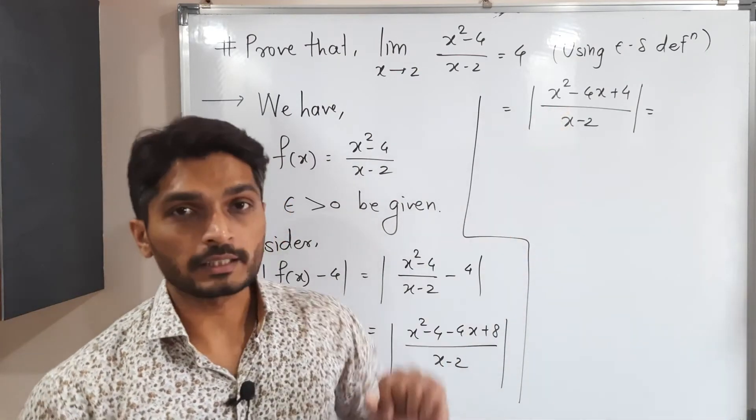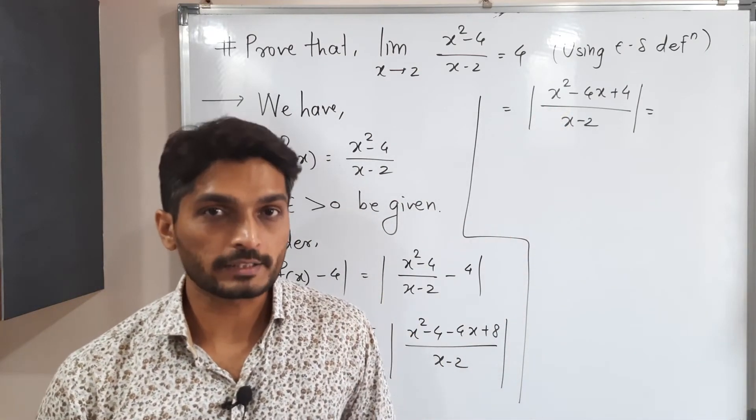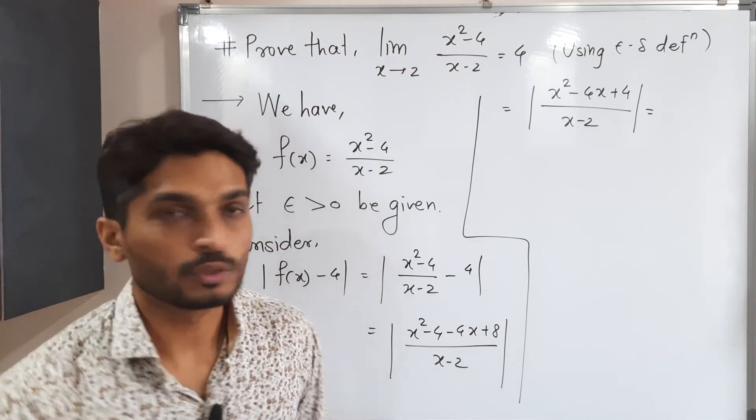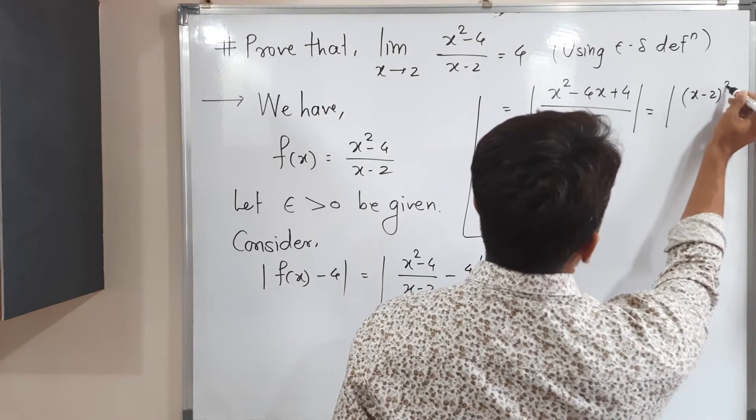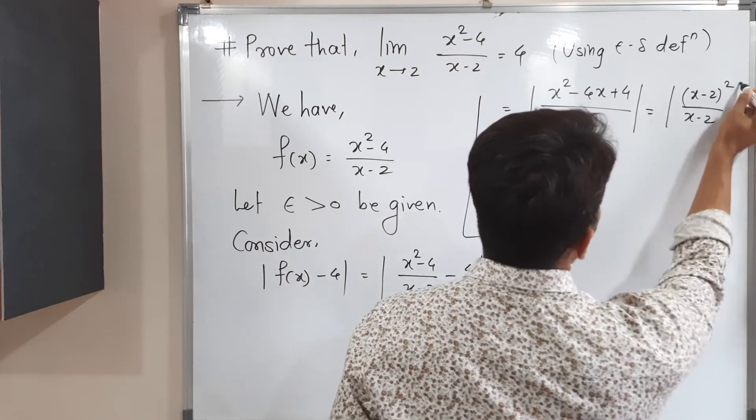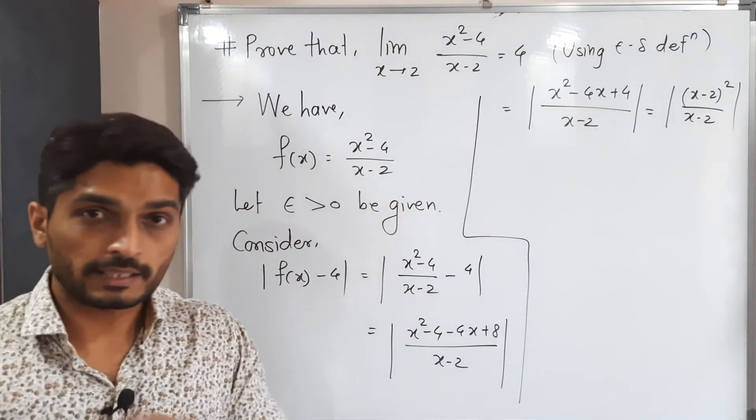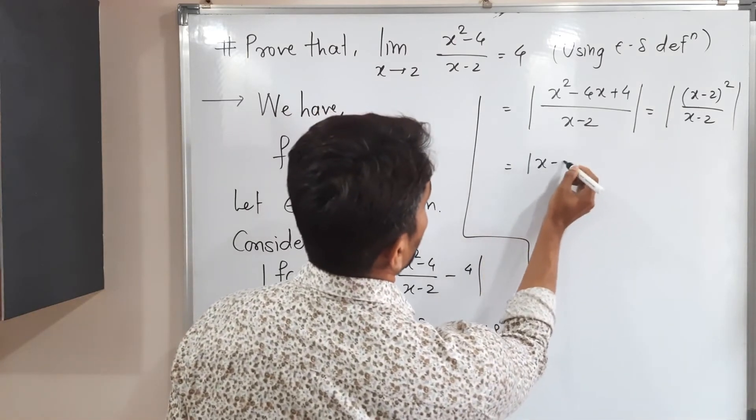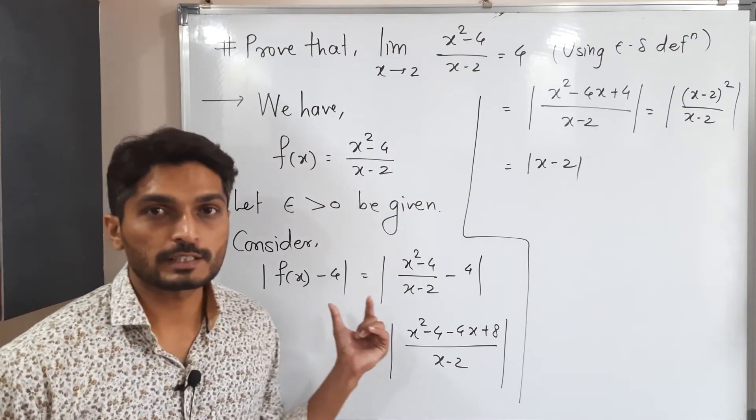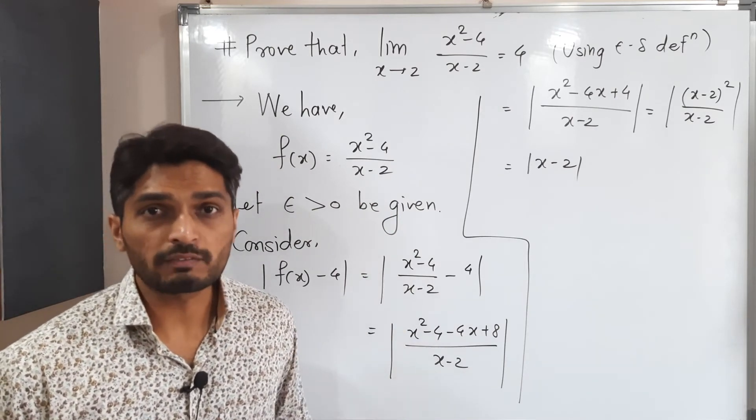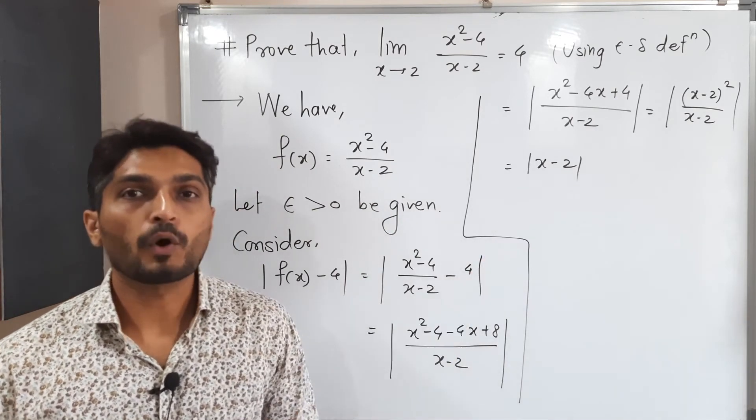Yes. The numerator is a square of some bracket. And that bracket is x minus 2. So that's why I can write mod x minus 2 square divided by x minus 2. So one bracket will get cancelled and we will have simply mod x minus 2. That means we solve this mod f of x minus 4. And after solving finally we got this is nothing but mod x minus 2.